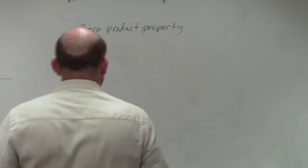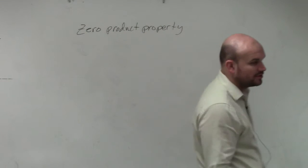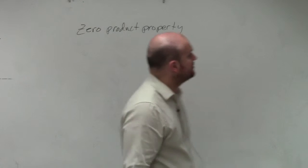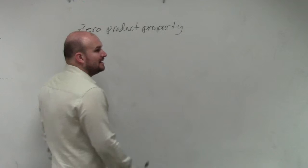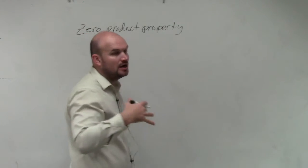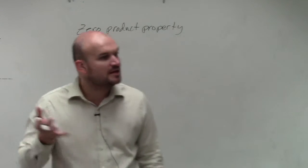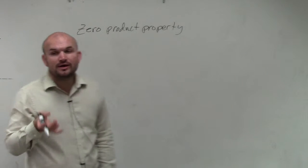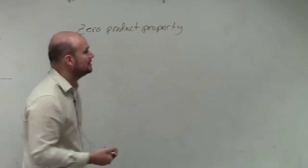So in the top there's a blank entry. I'd like you guys to write in the zero product property so we can explain it. Basically, what the zero product property simply states is that when you have the product of two or more expressions set equal to zero, then one or the other, or both, have to equal zero.